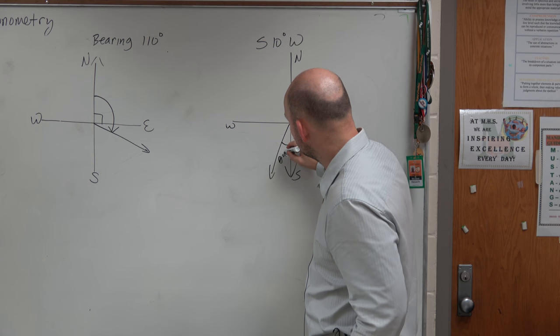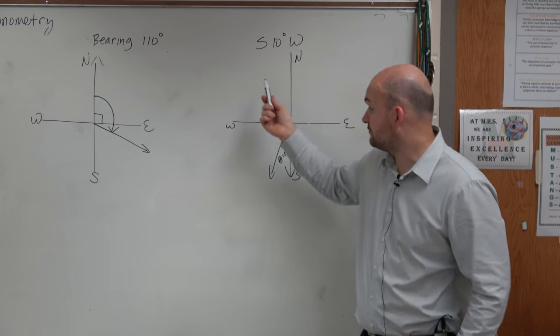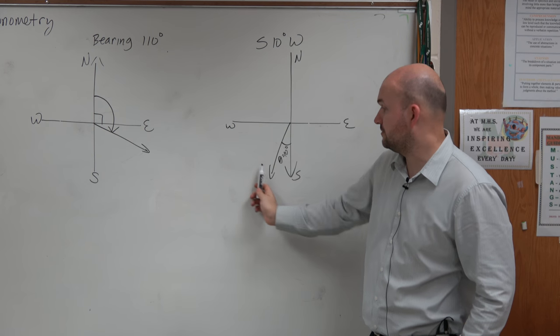That would be our theta equals 10 degrees. So in this case, we're not starting from due north. We're starting from due south. And then we're just going 10 degrees west.